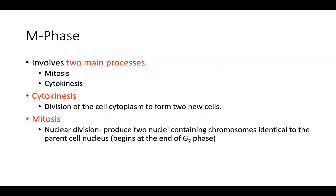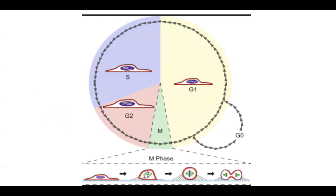Cytokinesis is the process by which the cytoplasm actually divides or splits in half to form two new cells. During M phase, the cell has gone through all preparation in interphase — growth, metabolism, enzyme synthesis, DNA replication — and now the cell is ready to divide via mitosis and cytokinesis.